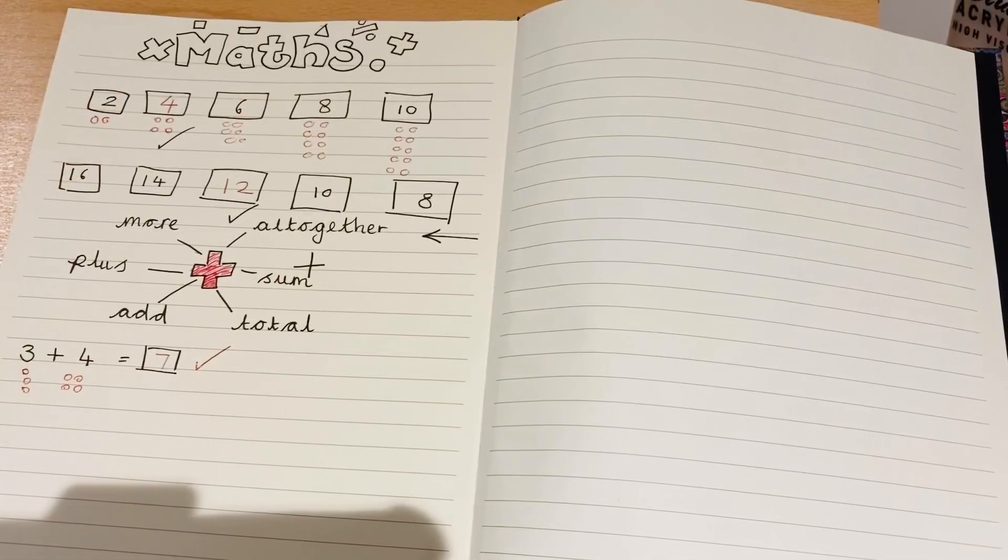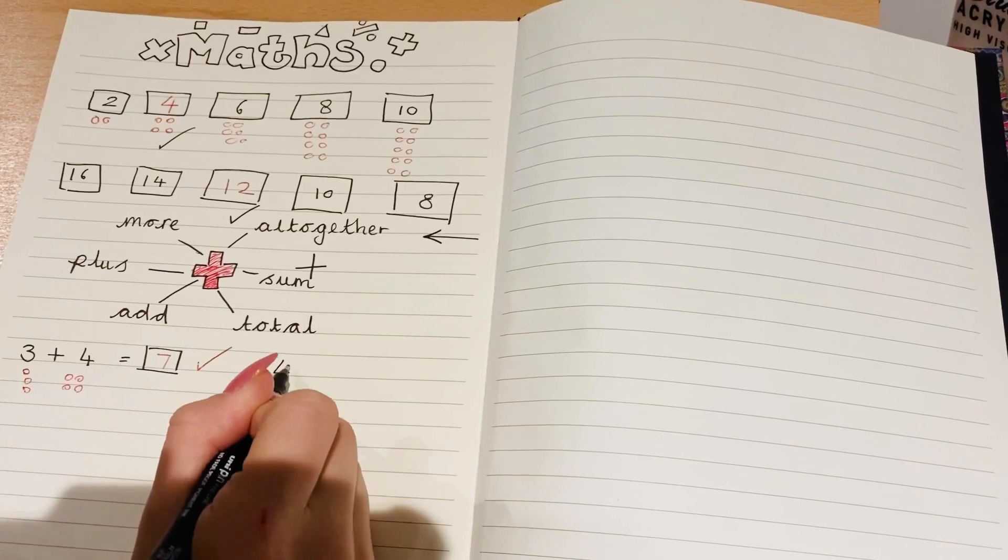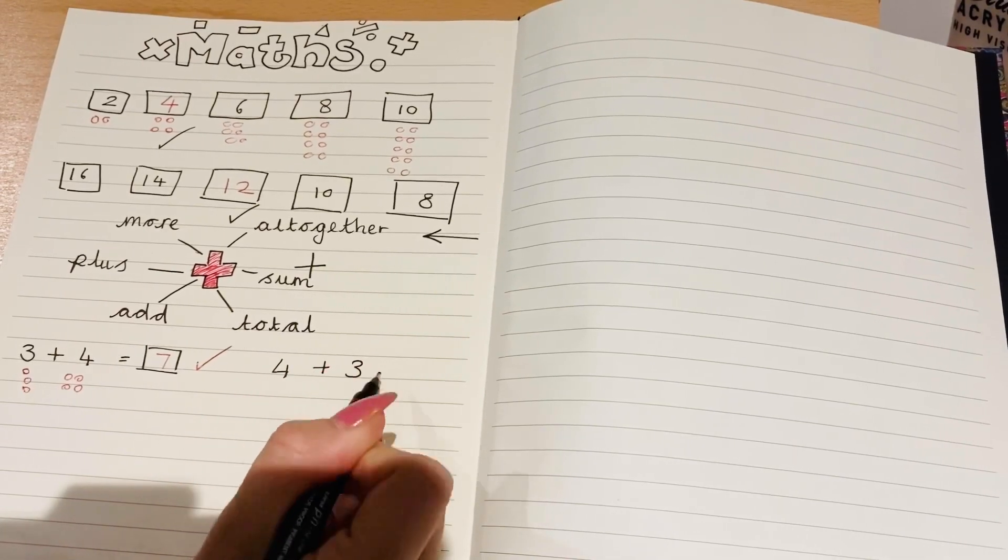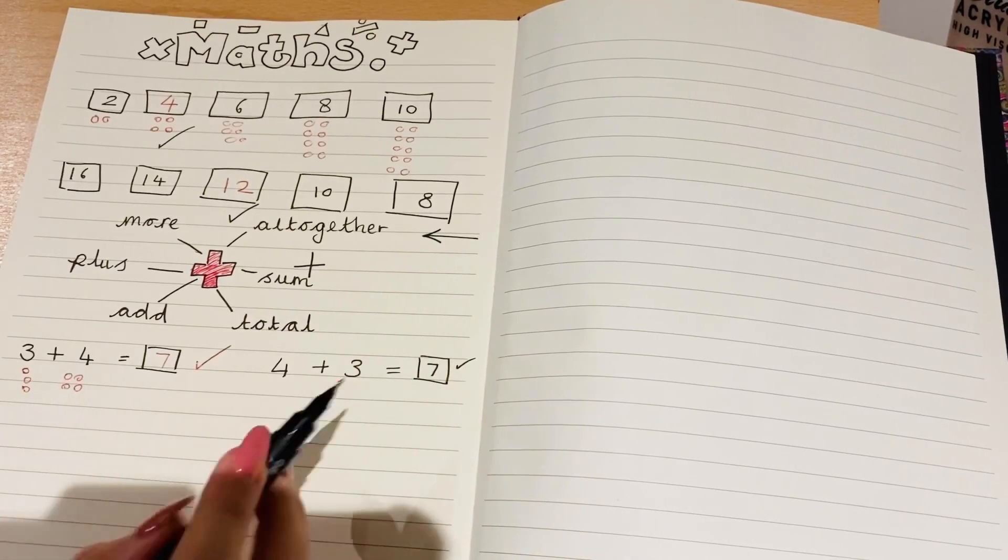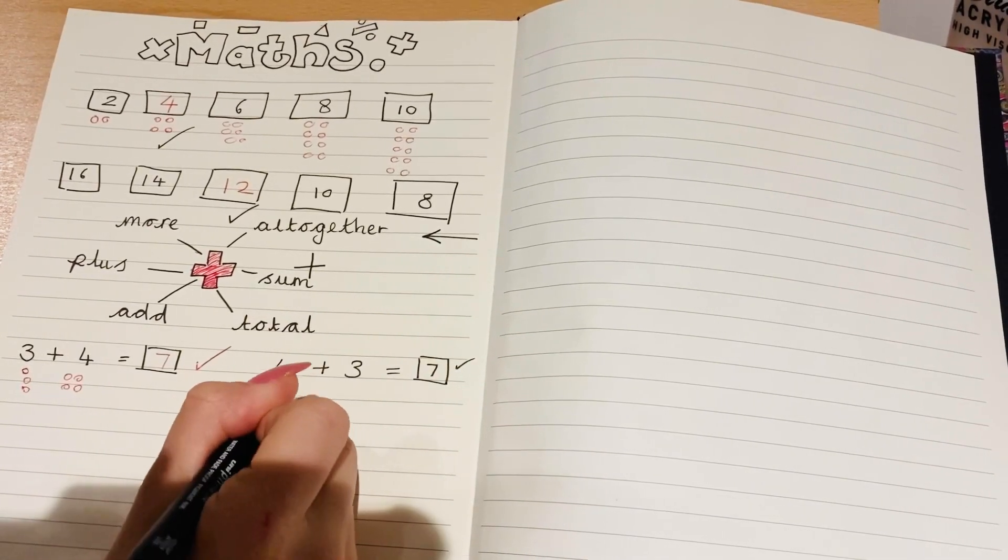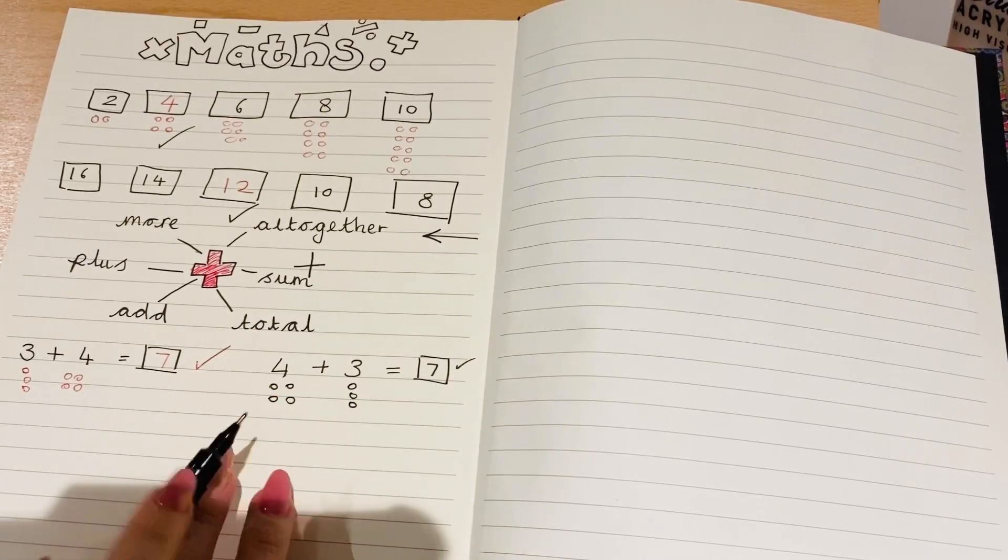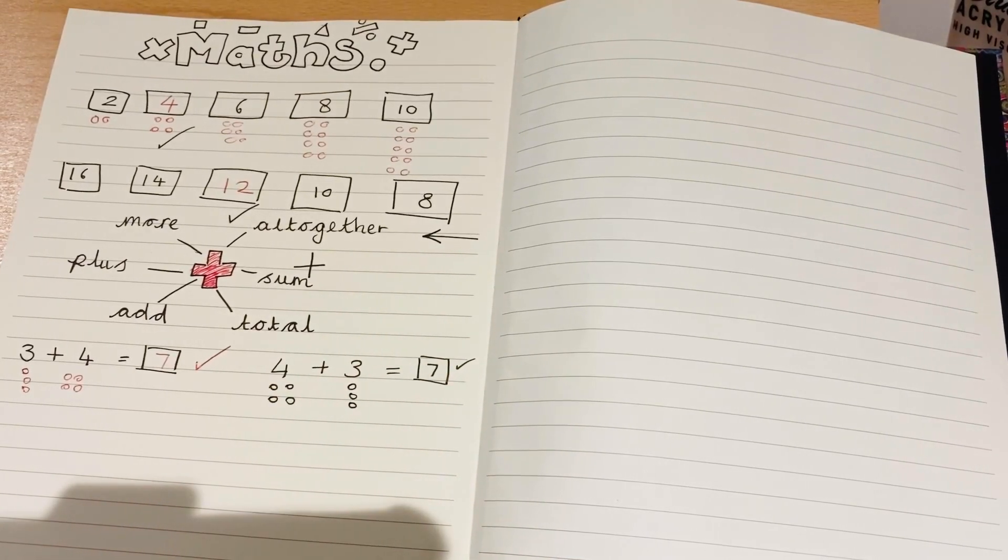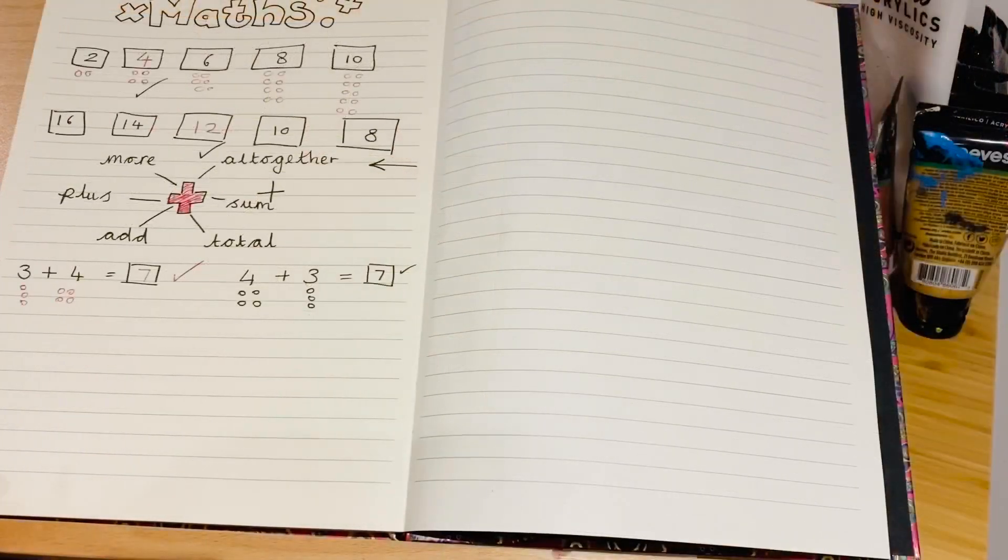When you know that three plus four is seven, there's actually a trick you can do, because you also know that four plus three equals seven as well. We haven't changed any of the numbers involved. We've just swapped them over what me and my class called the lazy swap. So we can swap those numbers over. And we still know that four plus three is always going to equal seven. So if you know that one, you know this one. Let's try another one.